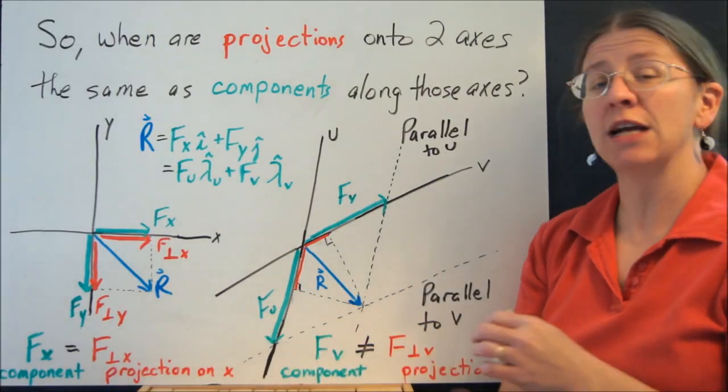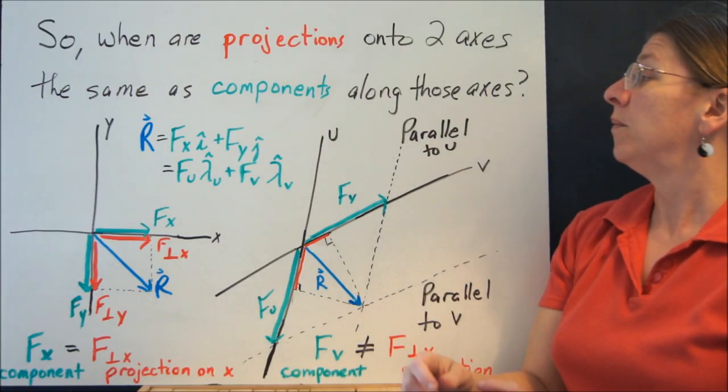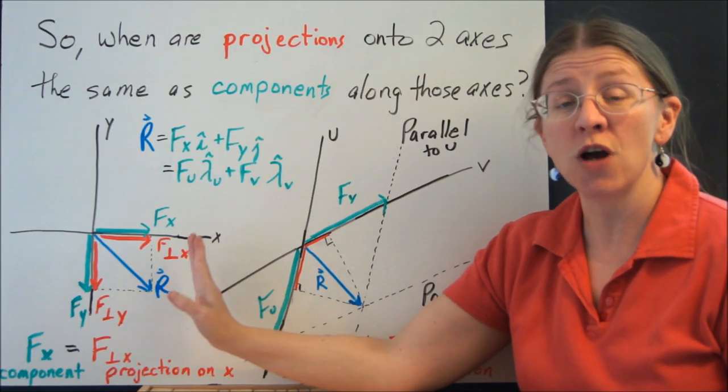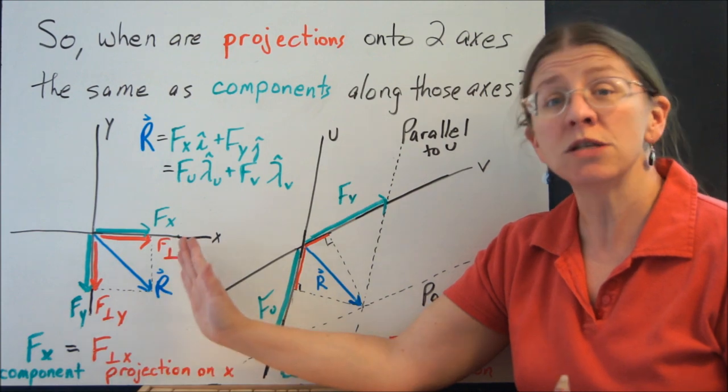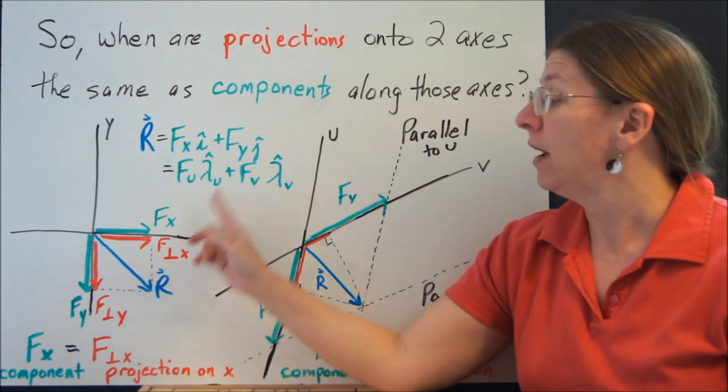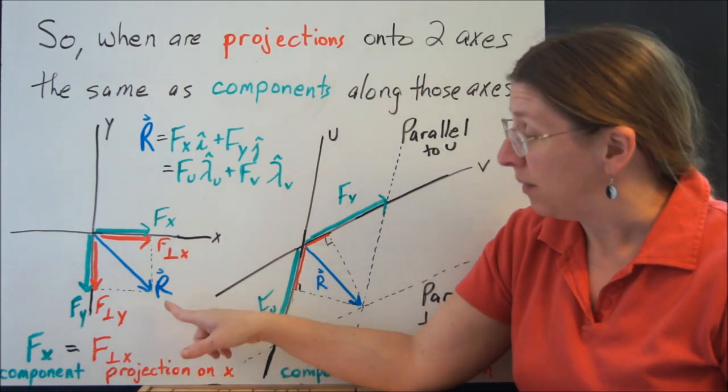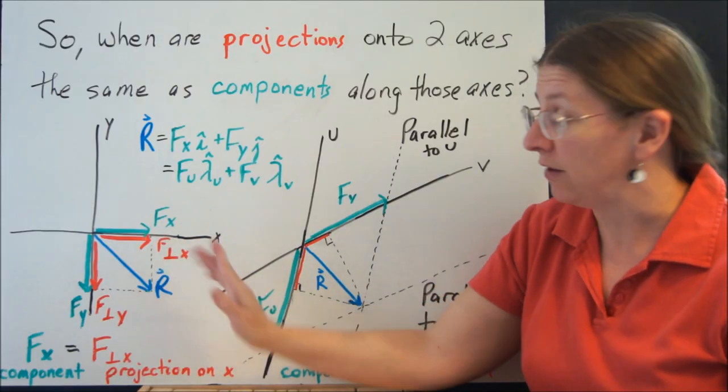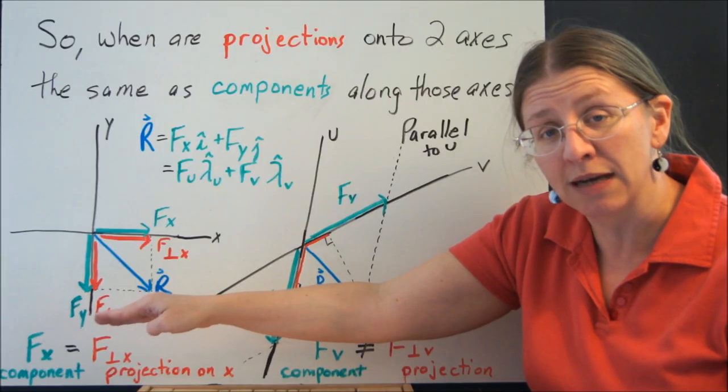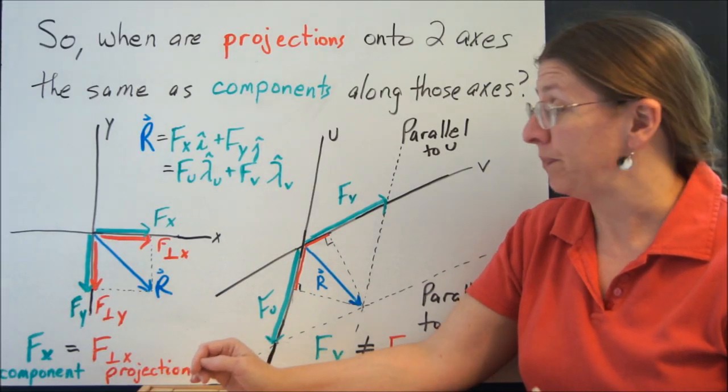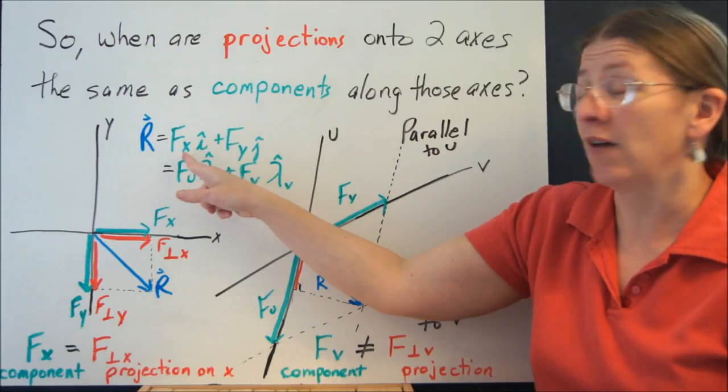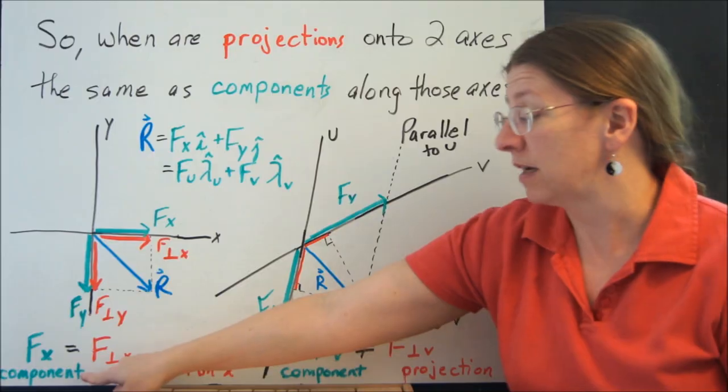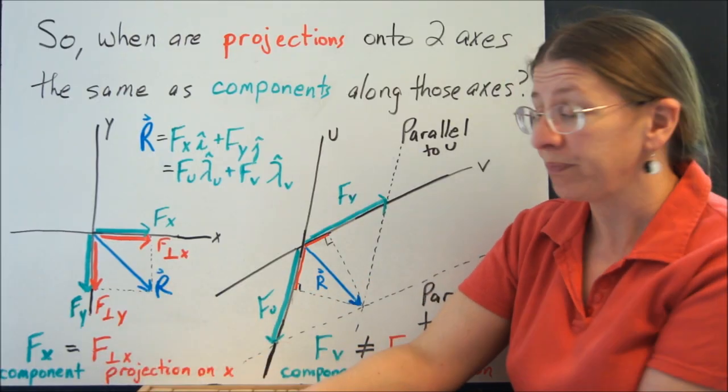So when is a projection and a component the same? People will sometimes use them interchangeably because when you're talking about a Cartesian coordinate system, which is our most common coordinate system, they are the same. Because these are your right triangles, the projection that you would get if you dropped the perpendicular to the axis and the components that you get are the same. So I will have FxI plus FyJ is equal to R. But Fx is, in fact, the component is equal to the projection.